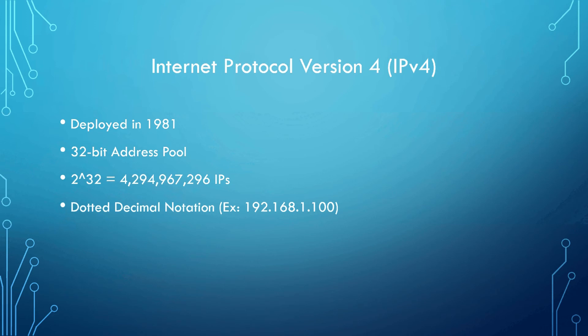First up: Internet Protocol version 4. In the beginning, man created IPv4 — and it was good. In order to connect to the internet, each device must have an internet protocol address assigned to it. This allows the device to communicate with other network devices and lets the internet service provider know where to route the traffic it receives. This system is called the Internet Protocol system and is designated IPv4. It was first deployed in 1981 and has a 32-bit address pool.